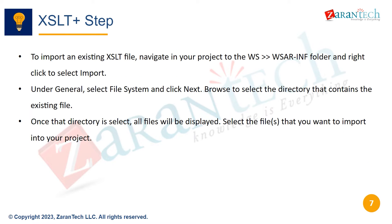To import an existing XSLT file, navigate in your Studio project to the WSWizor-INF folder and right-click to select Import. Under General, select File System and click Next. Browse to select the directory that contains the existing XSLT file. Once that directory is selected, all files will be displayed. Select the files that you want to import into your project.